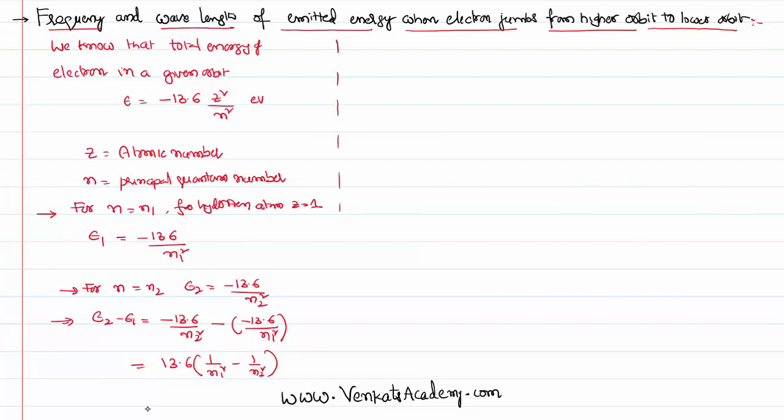That's the difference in the energies. So you can write the difference in the energies as h nu, because energy is emitted like a photon having a fixed amount of energy. Quanta is having energy h nu. Nu can be further written like c by lambda as 13.6 times 1 by n1 square minus 1 by n2 square.